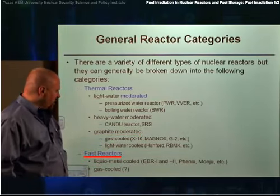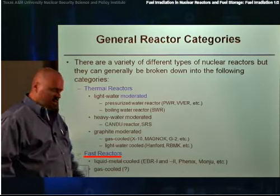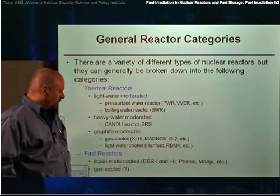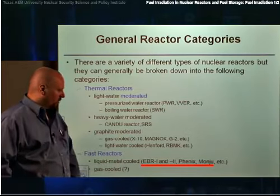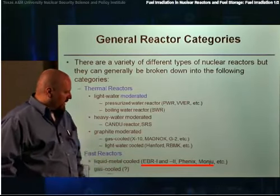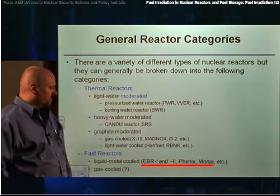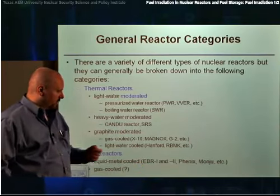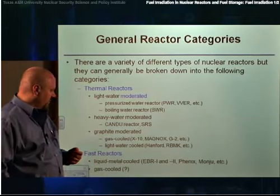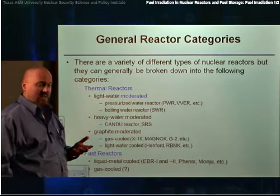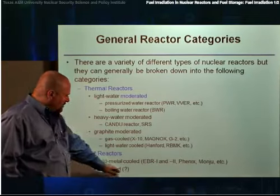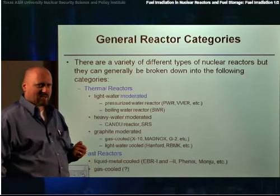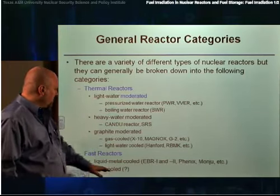Of the fast reactor types, there's really only one type that truly exists, which is the liquid metal type reactors. There have been several liquid metal cooled reactors: EBR-1 and EBR-2 in the United States, Phoenix in France, and Manju in Japan. The Russians also have a set of liquid metal cooled reactors called the BN series reactors. The gas-cooled fast reactor is a type that has been designed but really hasn't seen much in the way of production in the world.